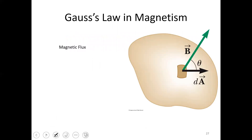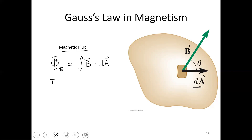Moving on to Gauss's law in magnetism. The first thing to define is magnetic flux. Just as with electric flux — where electric field lines punch through a surface — magnetic flux counts how many magnetic field lines pass through a surface element. We define magnetic flux as B dot dA, which equals the magnitude of B times the area times the cosine of the angle between the field direction and the normal to that area.